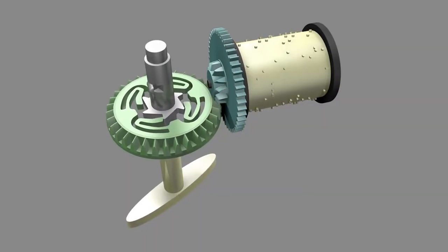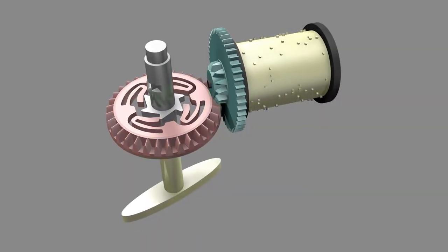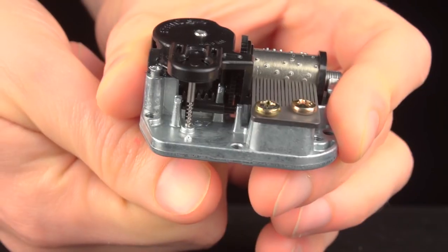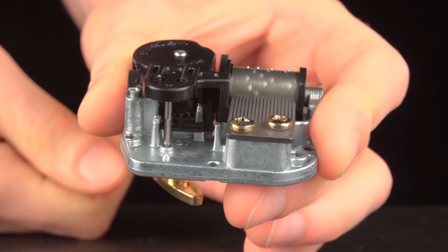As the spring unwinds, it rotates this bevel gear, which engages a second bevel gear affixed to the drum. But there's a problem with this setup. The spring will unwind quickly, and the music will play too fast.